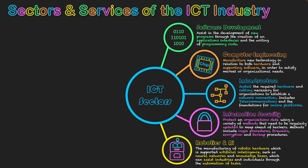Next is robotics and AI — the manufacturing of robotic hardware supported by artificial intelligence, using technologies such as neural networks and knowledge bases. These technologies assist both individuals and businesses through automation. For example, cars are developed through assembly lines where robots put the cars together using their own sensors, making the process safer for people and restricting them from more dangerous jobs.